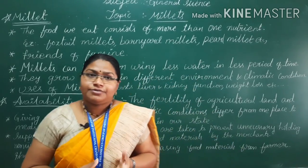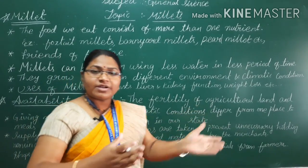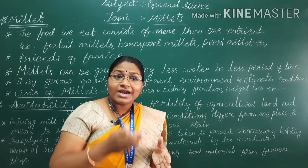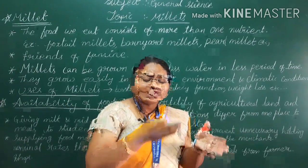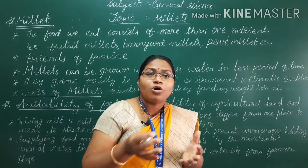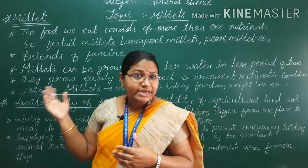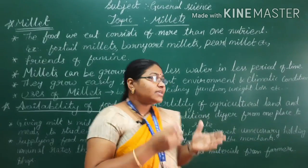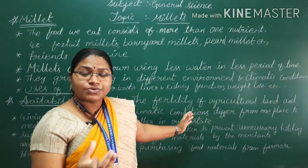Next is the availability of food. The fertility of agricultural land and climatic conditions differ from one place to another within our state. The soil type — black soil, red soil — and other conditions change from place to place. That's why it is not possible to cultivate all crops in one place. For example, in northern and southern Karnataka we can cultivate millets and rice, while in other places we can cultivate ragi, jowar, and wheat.